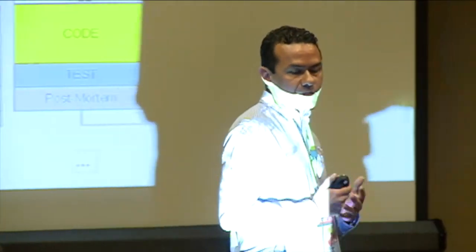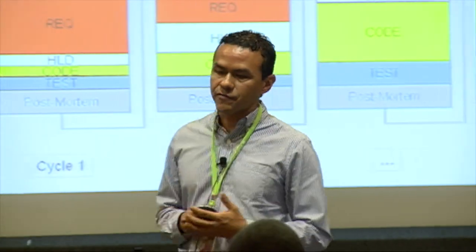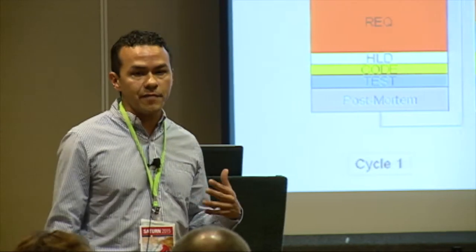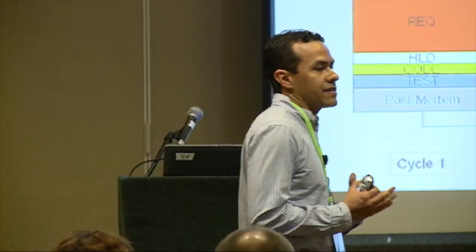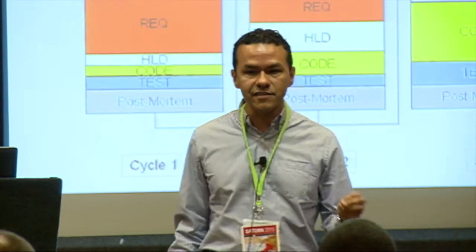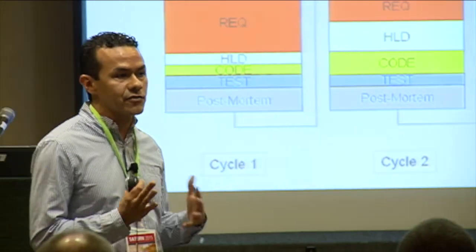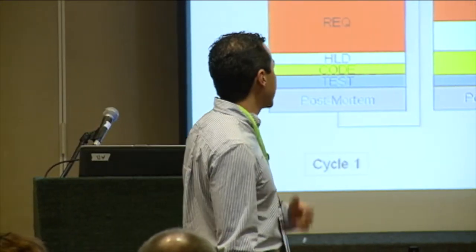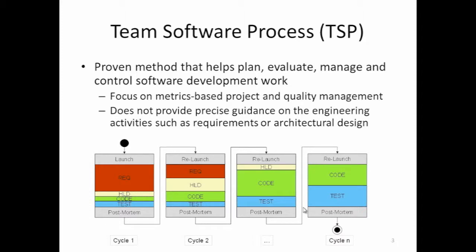Possibly everybody here is more or less familiar with the Team Software Process, but let me give a very quick introduction. This is mostly a project development method. The focus for TSP is on project and quality management based on metrics. TSP doesn't really give you guidance on how to do your requirements — it won't say do use cases or user stories — and it doesn't tell you how to do architecture. TSP works by dividing the project across a series of cycles, each characterized by having a launch and a post-mortem, with phases called requirements, high-level design, code, and testing.